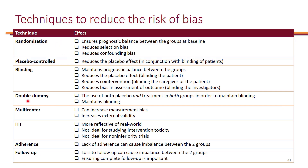Here is a summary of the beneficial effects of these techniques. Randomization ensures prognostic balance between groups at baseline, reduces selection bias, and reduces confounding bias. Blinding maintains prognostic balance between groups during the study, reduces the placebo effect, reduces co-intervention, and reduces bias in the assessment of outcomes.